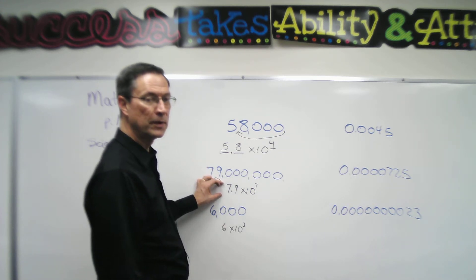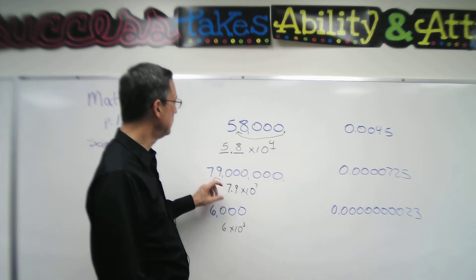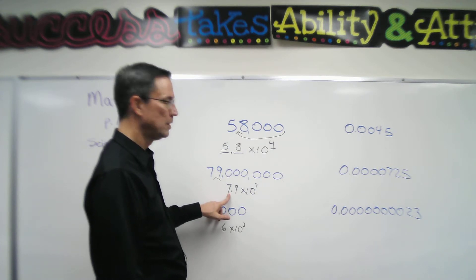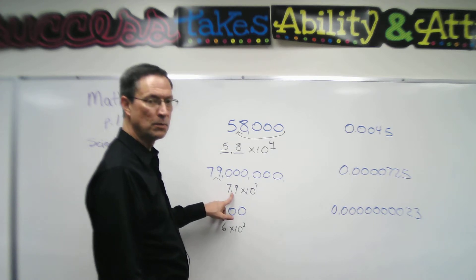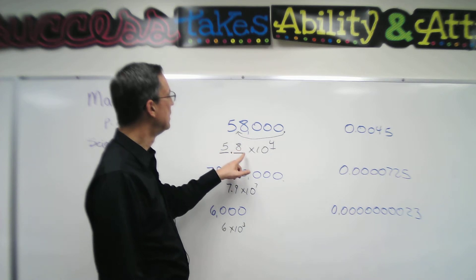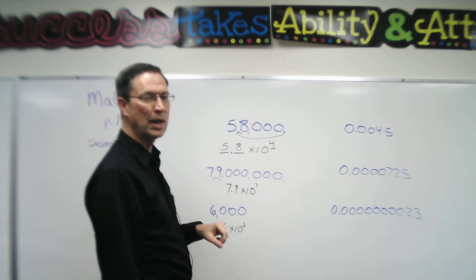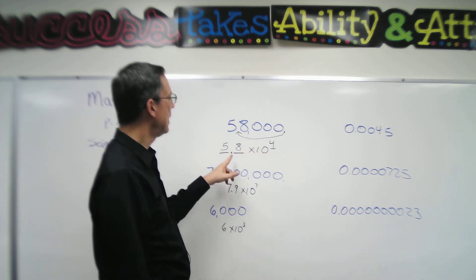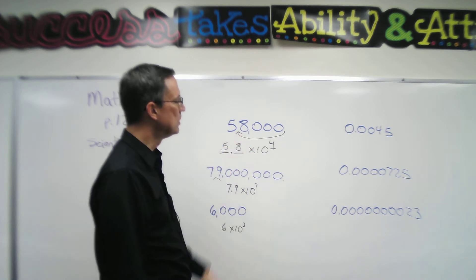This is called scientific notation, and in scientific notation there's only one digit. This is important. One digit and then a decimal comes right after that. So don't write 58 times 10 to the third or you'll have it wrong. It has to be between those digits.